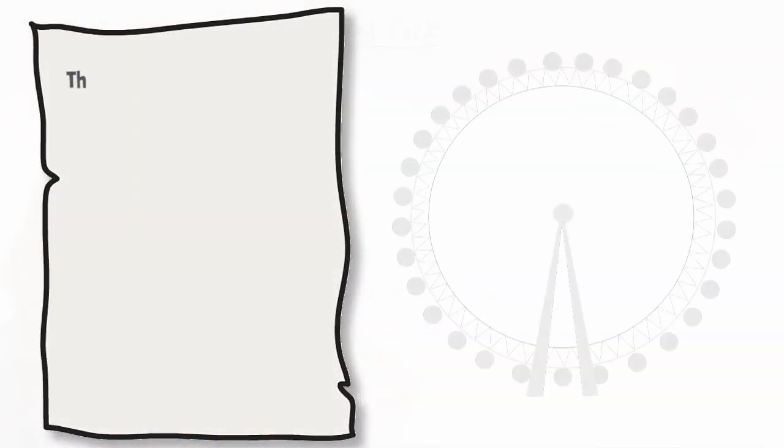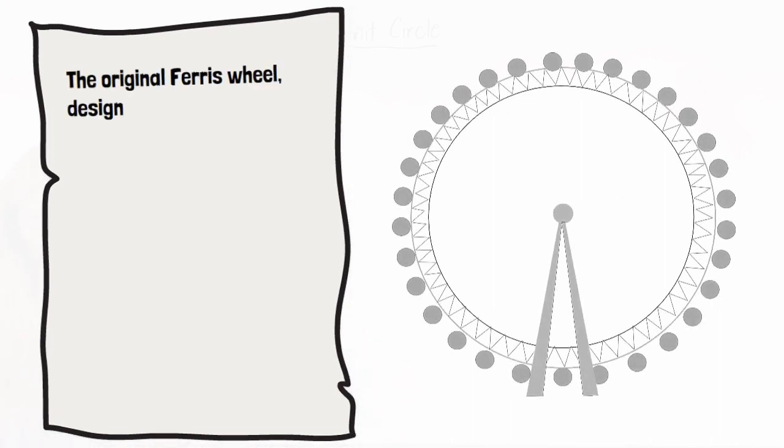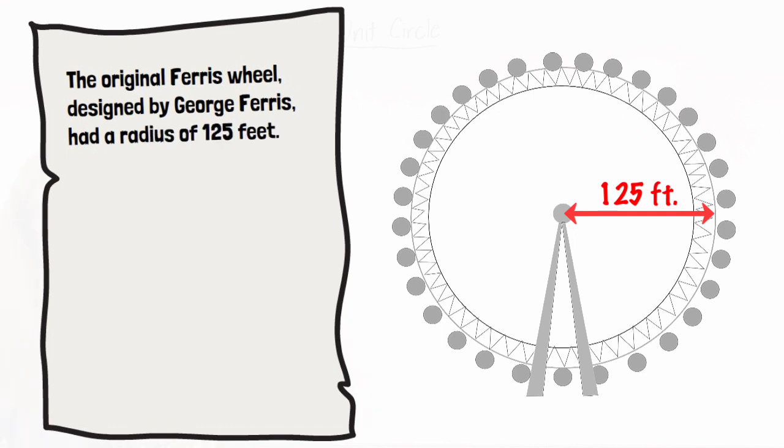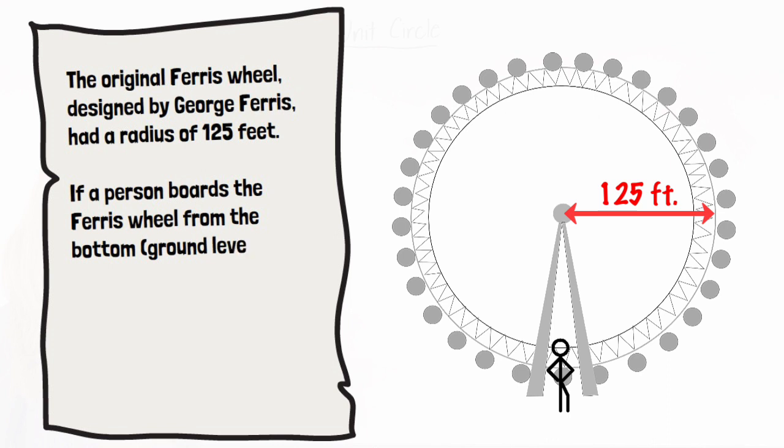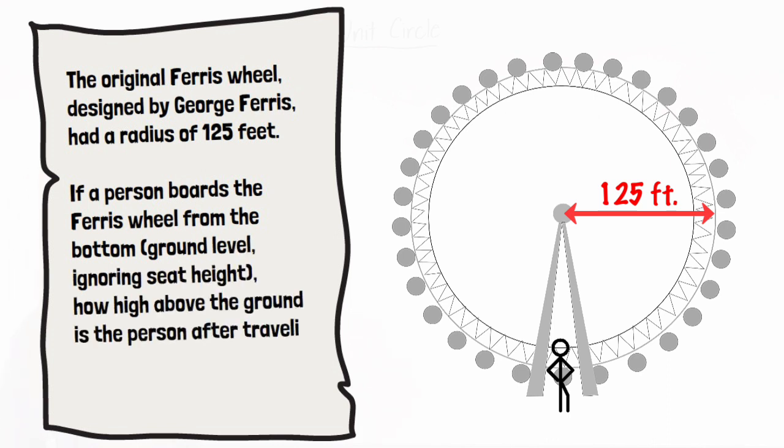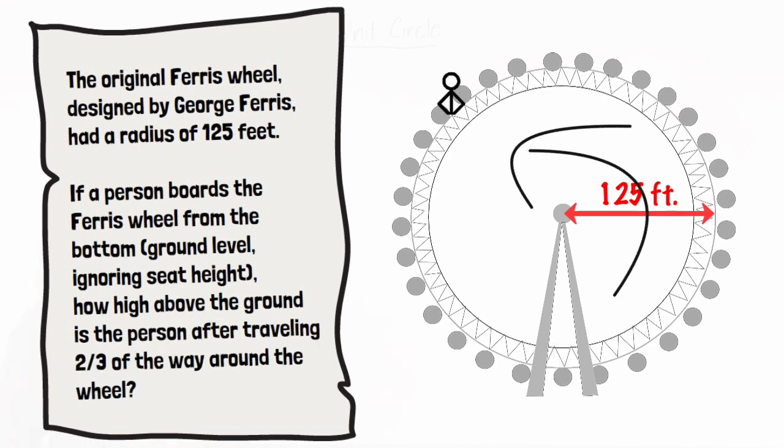The problem that has been given to us is the original Ferris Wheel designed by George Ferris having a radius of 125 feet. If the person boards the Ferris Wheel from the bottom, which is ground level, ignoring seat height, how high above the ground is the person after traveling two-thirds of the way around the wheel?